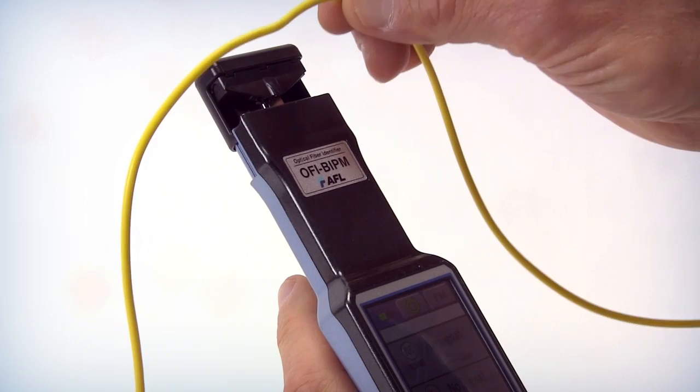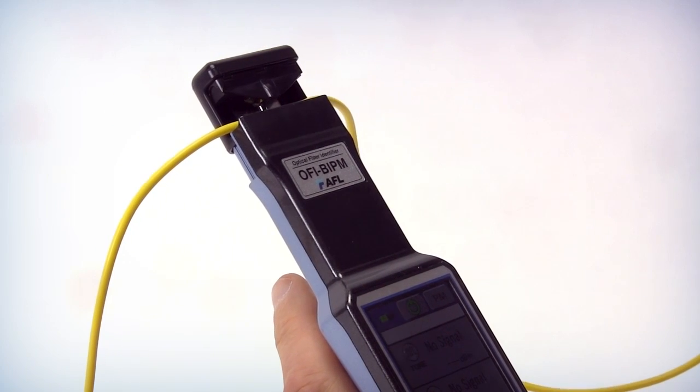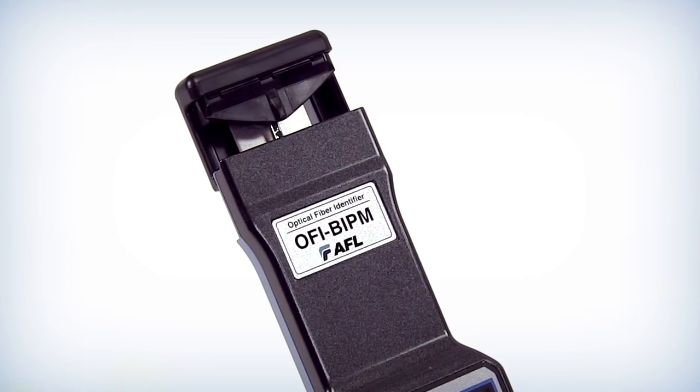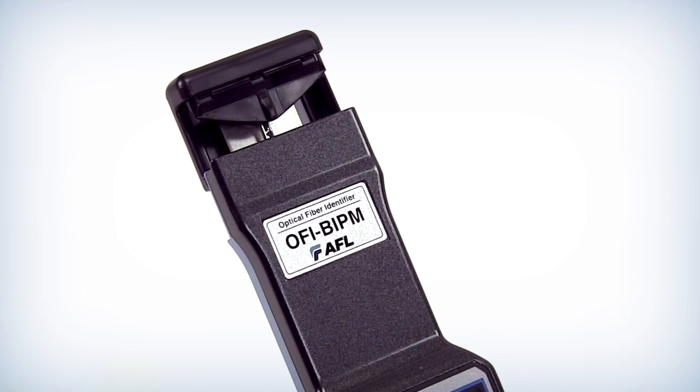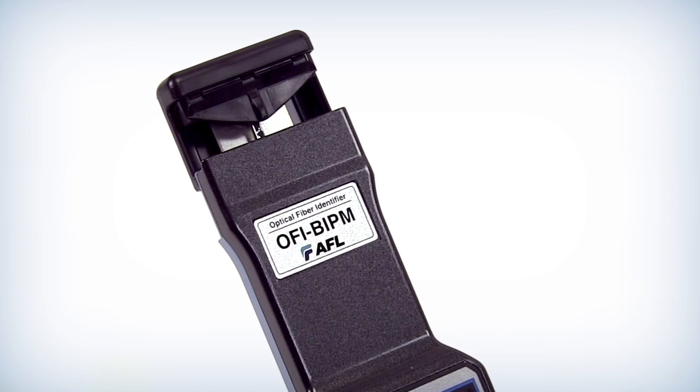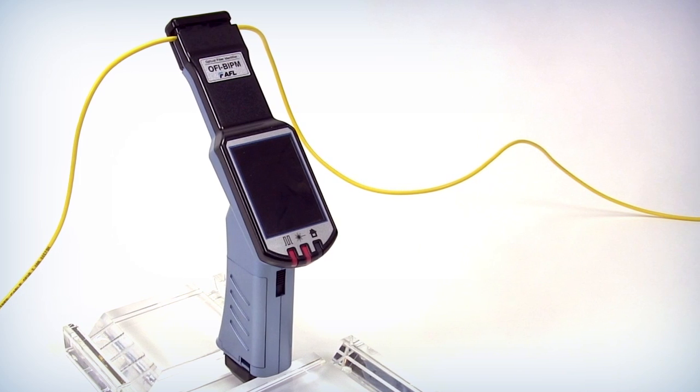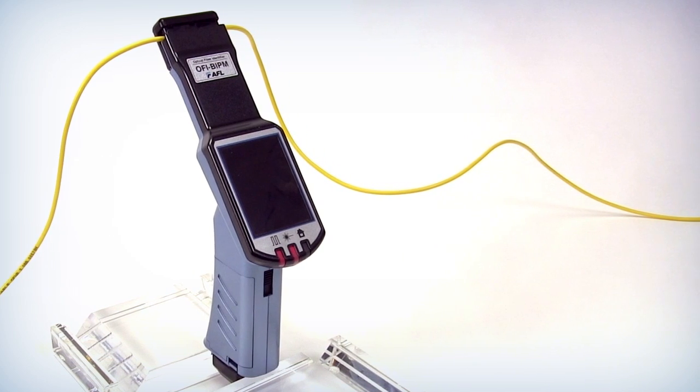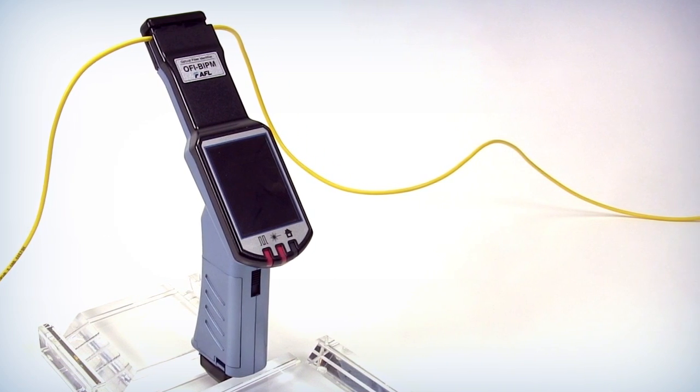Measurements are taken by opening the plunger and placing the fiber across the sensors. If the plunger is closed and locked, simply pull the plunger and release it to open the plunger head. If the fiber is dirty, it is best to clean the jacket of the fiber with some alcohol first to prevent the sensors from getting dirty.